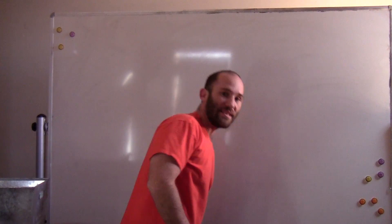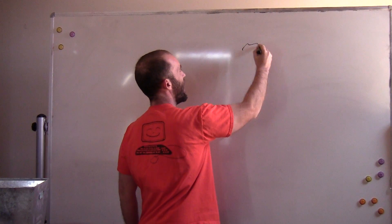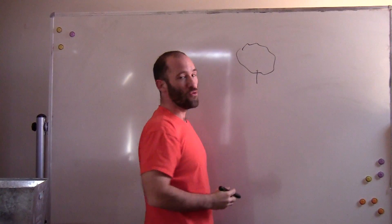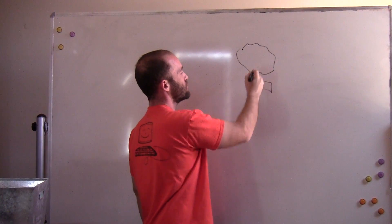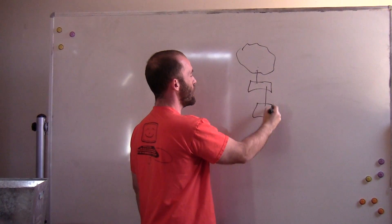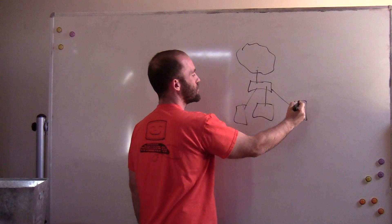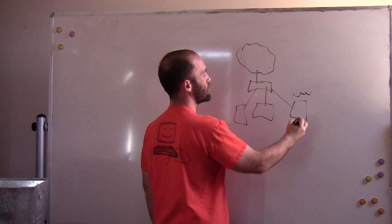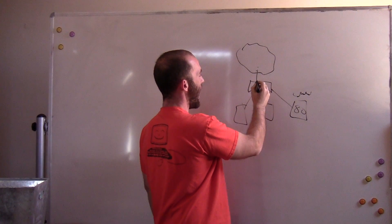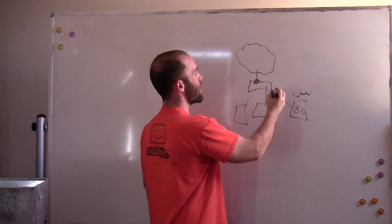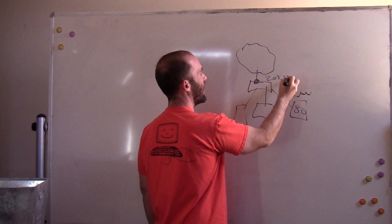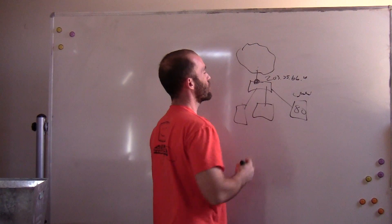Let's go over to the whiteboard so I can explain how all this works. Basically, when we are dealing with port forwarding, we have the internet, and we have you connected to the internet. You have a router or modem connected to your internet connection, and below that you have all of your different servers. Let's say you have a web server — your www server — and that's port 80. You will have an external IP address for your internet connection, so let's say your external IP address is 203.55.66.4.